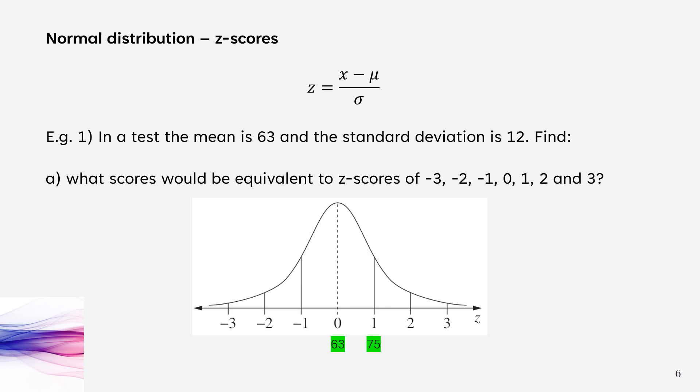To get the z-score of 2, we can add two standard deviations or add 12 to our first one, so to our 75. Adding 12 to 75 gets you 87. Adding 12 again gets you 99 for a z-score of 3.